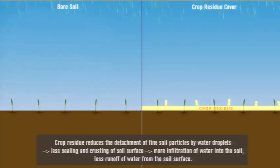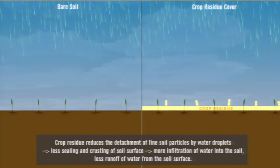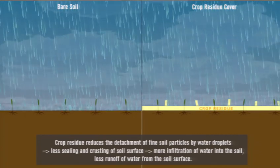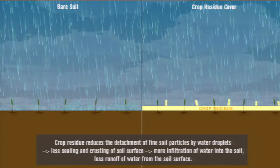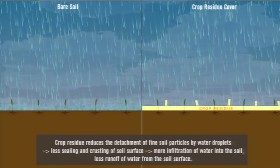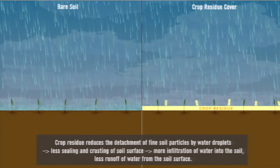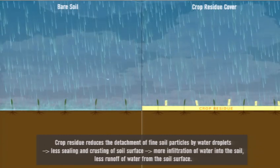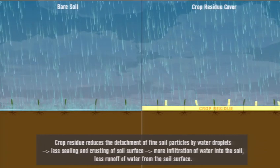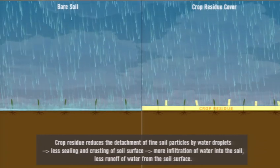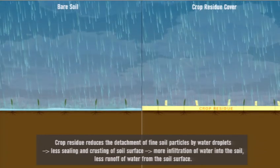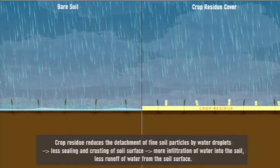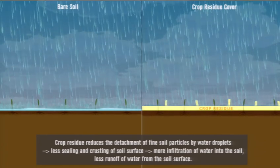Water droplets striking the soil surface and water flowing across the soil surface break soil aggregates into fine, individual soil particles. These particles wash, settle into, and block surface pores, causing the soil surface to seal, preventing water from soaking into the soil.